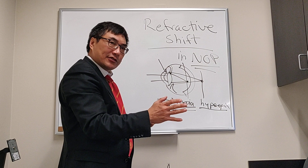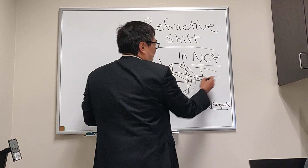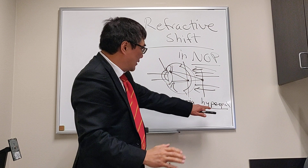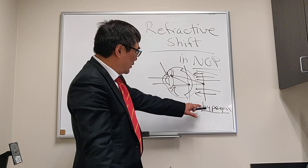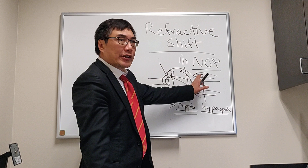We also see a hyperopic shift from fluid pressing on the back of the globe, causing choroidal folds. This can occur in idiopathic intracranial hypertension, any cause of papilledema, any cause of choroidal folds — including spaceflight-associated neuro-ocular syndrome — as well as choroidal thickening.